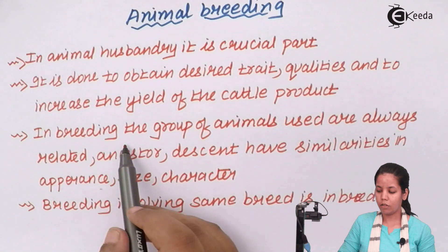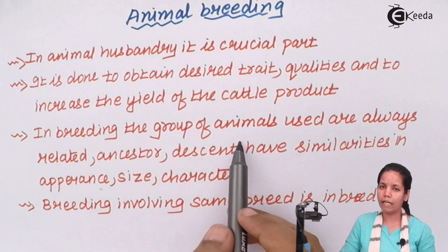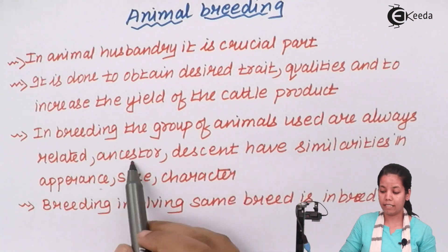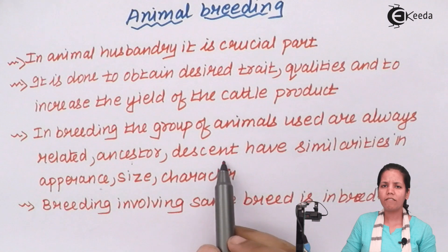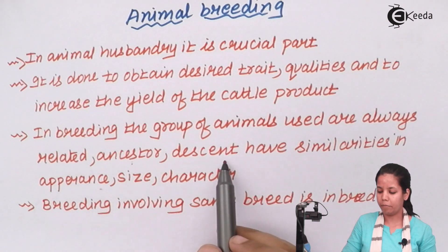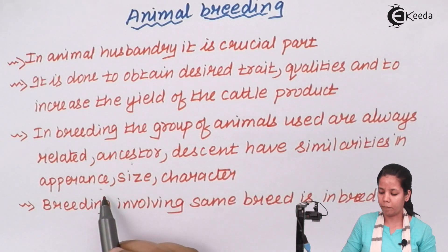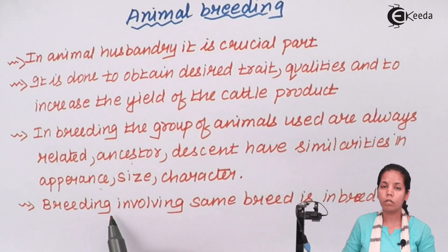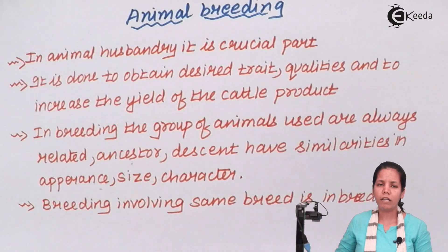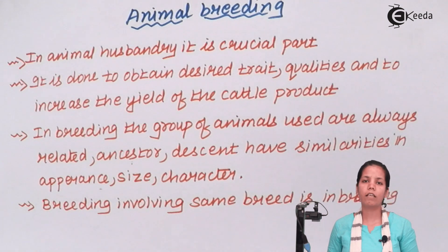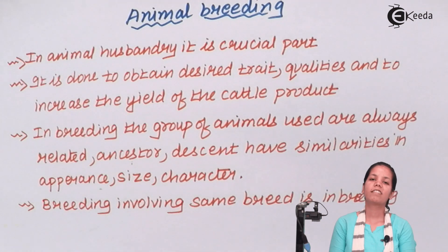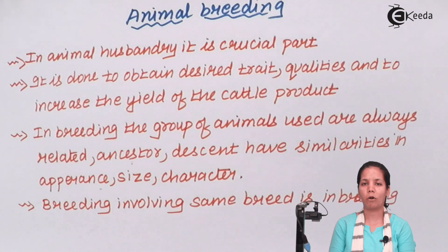Whenever breeding of animals is done, the group of animals used are quite related to each other — they could be ancestors or descendants — and they have similarities in features such as size, character, and appearance. When breeding involves two different species of the same breed or same origin, that is called inbreeding. Different kinds of breeding techniques and methods are used widely in India for different results, and this covers the key parameters looked upon in animal breeding.